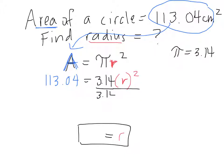Divide by 3.14. We're going to divide the right side by 3.14, which reduces to 1. And we divide the left side by 3.14 as well. So 113.04 divided by 3.14.